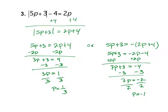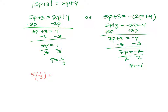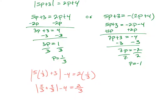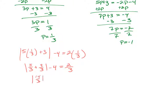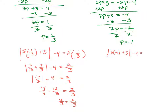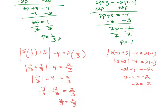So now I'm going to do the check. Substituting p equals 1/3: 5 times 1/3 plus 3 minus 4 equals 2 times 1/3. So 5/3 plus 9/3 gives 14/3 minus 4. Finding a common denominator: 14/3 minus 12/3 equals 2/3. So 2/3 equals 2/3. Now with negative 1: 5 times negative 1 plus 3 minus 4 equals 2 times negative 1. Negative 5 plus 3 equals negative 2, so absolute value of negative 2 minus 4 equals negative 2. The absolute value of negative 2 is 2, and 2 minus 4 is negative 2. So both are solutions.